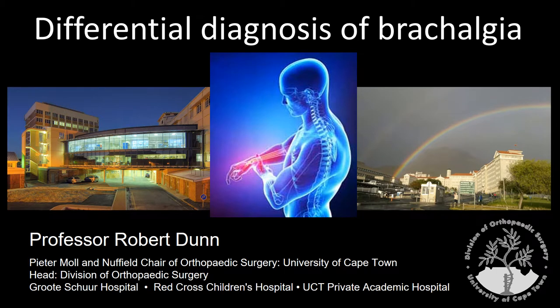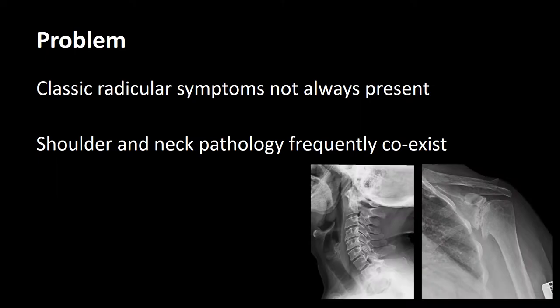Good day. I will be discussing the differential diagnosis of brachialgia or arm pain. The problem is that the classic radicular symptoms associated with cervical pathology are not always present, and that shoulder and neck pathology frequently coexist, as in this example with multilevel cervical degenerative changes and severe glenohumeral arthritis. It can become quite difficult to decide which pathology is causing the patient's presenting symptoms.